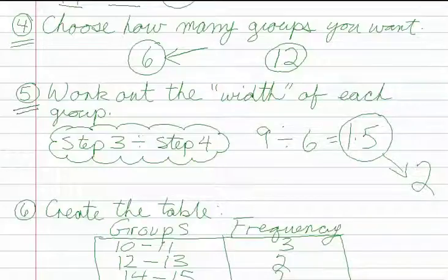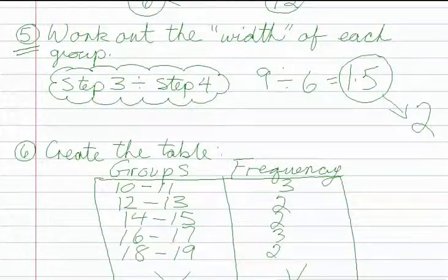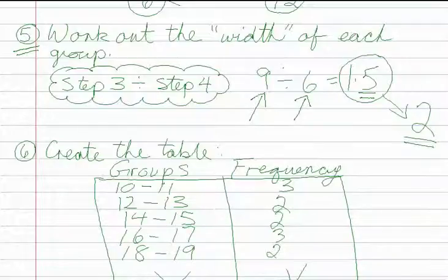And we work out the width of each group. That means we want to know how many marks are going to be in each group of our grouped frequency table. And we do that by taking the result of step three, which was, as you remember, nine, because it was 19 take away 10, leaves us with nine. And we divide that by the answer we had, or the decision we made in step four, which was to have six groups. So we worked out nine divided by six, leaves us with 1.5. Well, we can't have half of students' marks, so we have to round that. And we know that if we have five after the decimal, we need to round it up to two. So actually we're going to have two marks in each group.